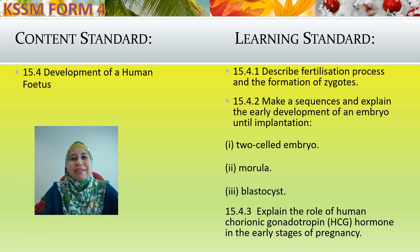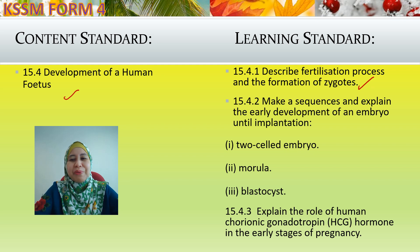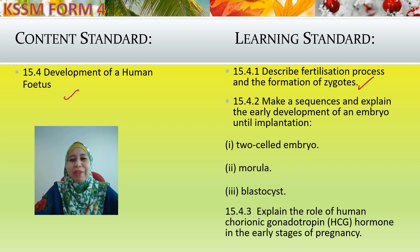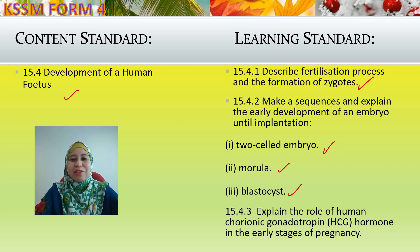The content standard under KSSM Form 4 is 15.4 — Development of a Human Fetus. The first learning standard, 15.4.1, is to describe the fertilization process and the formation of a zygote. The second, 15.4.2, is to make a sequence and explain the early development of an embryo until implantation, starting with a 2-cell embryo, followed by morula, and then blastocyst. The third learning standard, 15.4.3, is to explain the role of Human Chorionic Gonadotropin (HCG) hormone in the early stages of pregnancy.